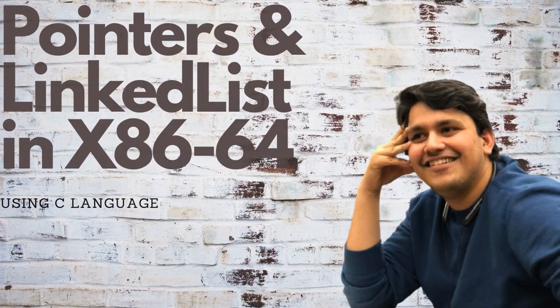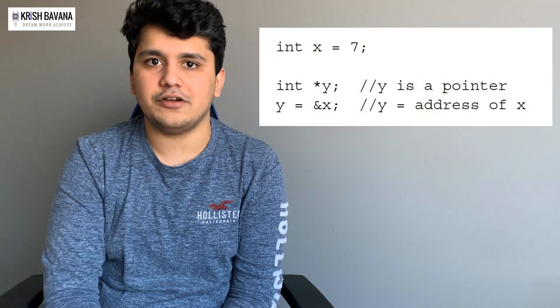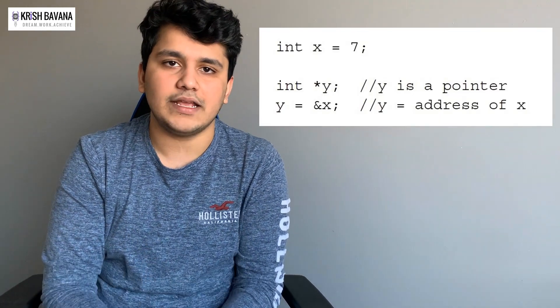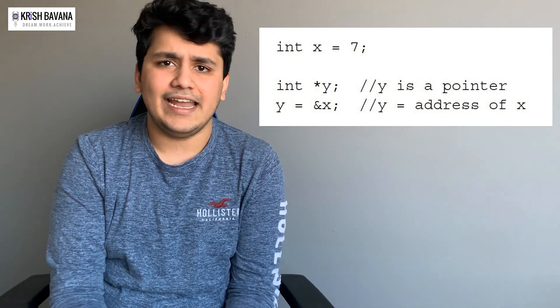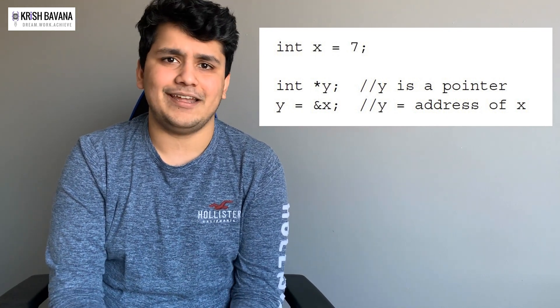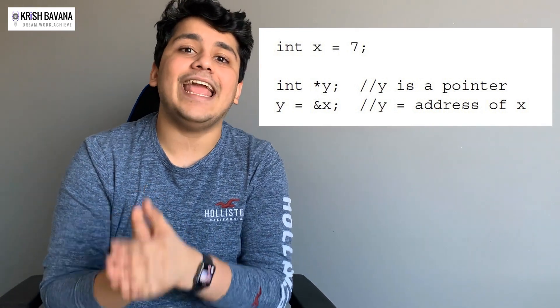Let's start with pointers in assembly. I hope everybody knows how pointers work in C or C++, because they're pretty much the same in both languages. Just for a quick review: when declaring a pointer you need a star in front of it so that you know you're pointing it to something. For example, you can say int x equals five.